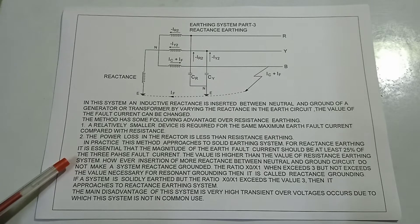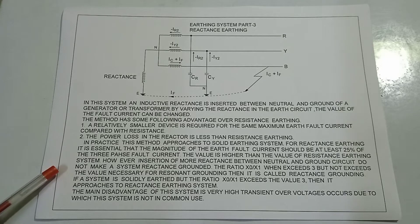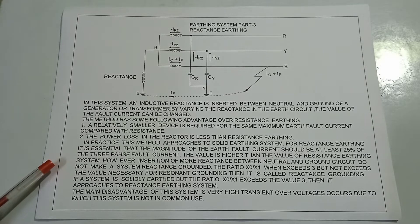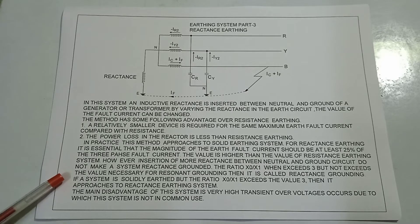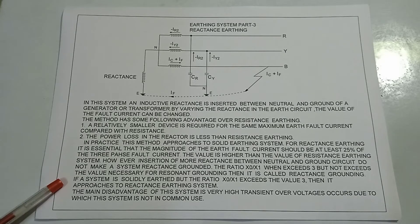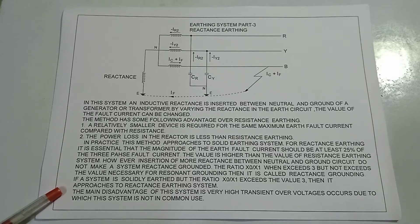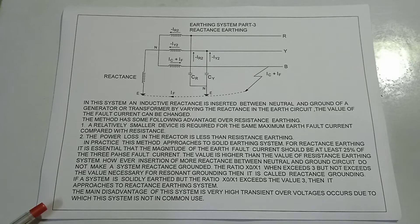The ratio X0 by X1 — where X0 means zero sequence reactance and X1 means positive sequence reactance — when it exceeds three but not the value necessary for resonant grounding, it is called reactance grounding. If a system is solidly earthed and the ratio X0 by X1 exceeds three, then it approaches the reactance earthing system. The main disadvantage is very high transient overvoltage, due to which the system is not in common use.